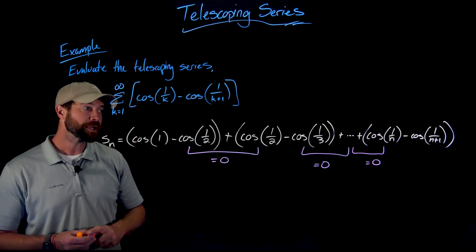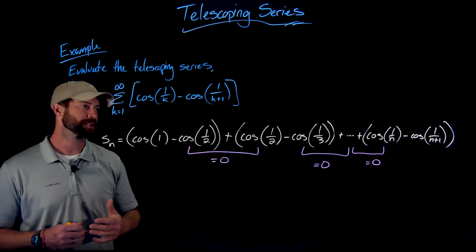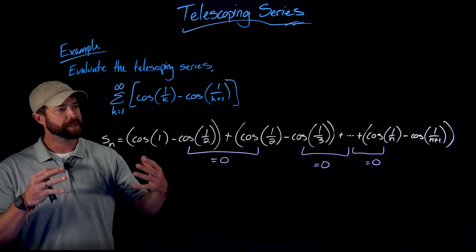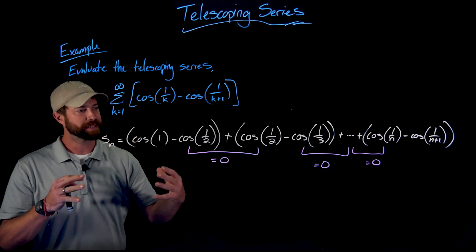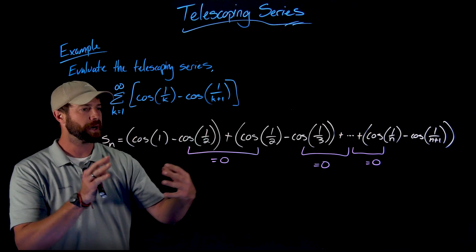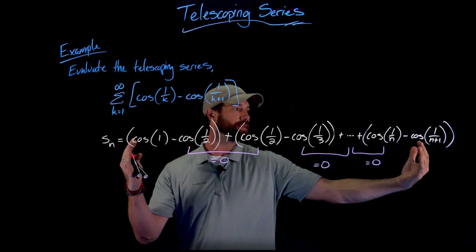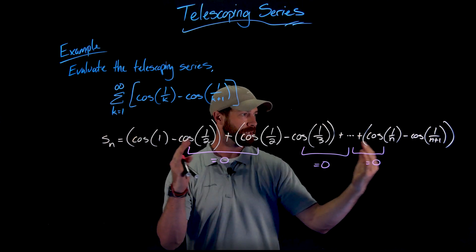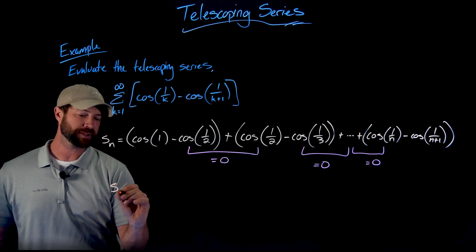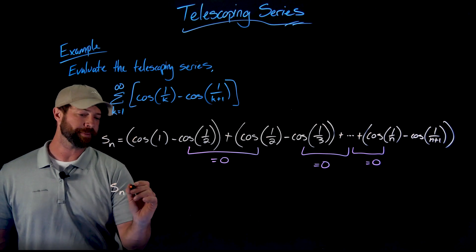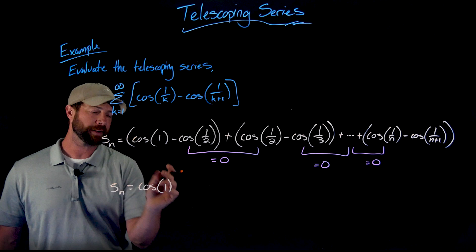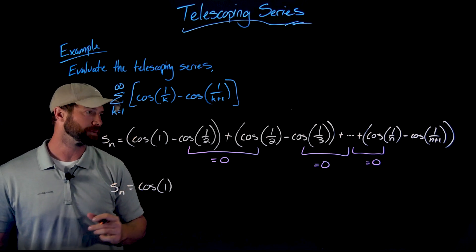This is the telescoping nature — why we call these telescoping series. It doesn't have to be two terms; they could have different natures. But as you add these together, the terms in the middle will all cancel each other out. This large nth partial sum actually collapses, or telescopes, and we have an easy explicit formula: the nth partial sum is always just the cosine of one — the first term that does not get canceled — minus the cosine of one over n plus one.